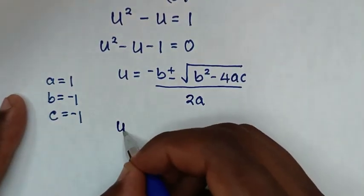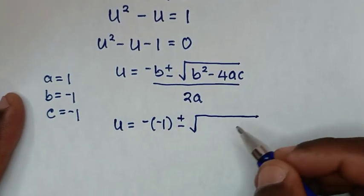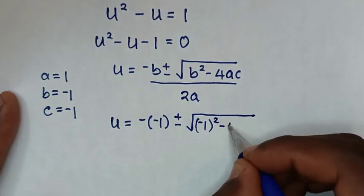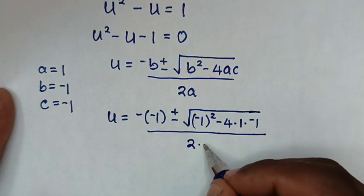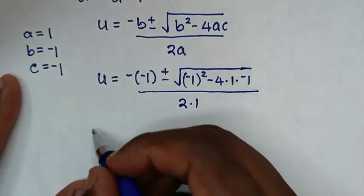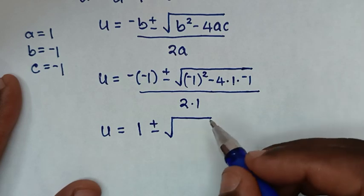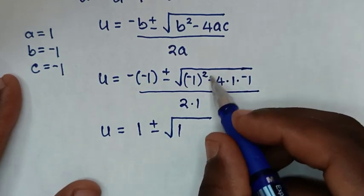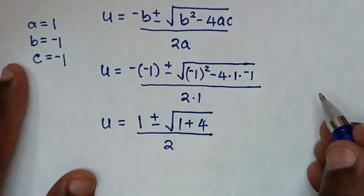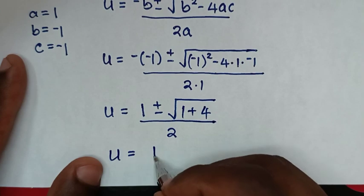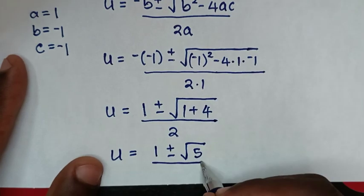Substituting into the formula: u = (−(−1) ± √((−1)² − 4·1·(−1))) / (2·1) = (1 ± √(1 + 4)) / 2 = (1 ± √5) / 2.